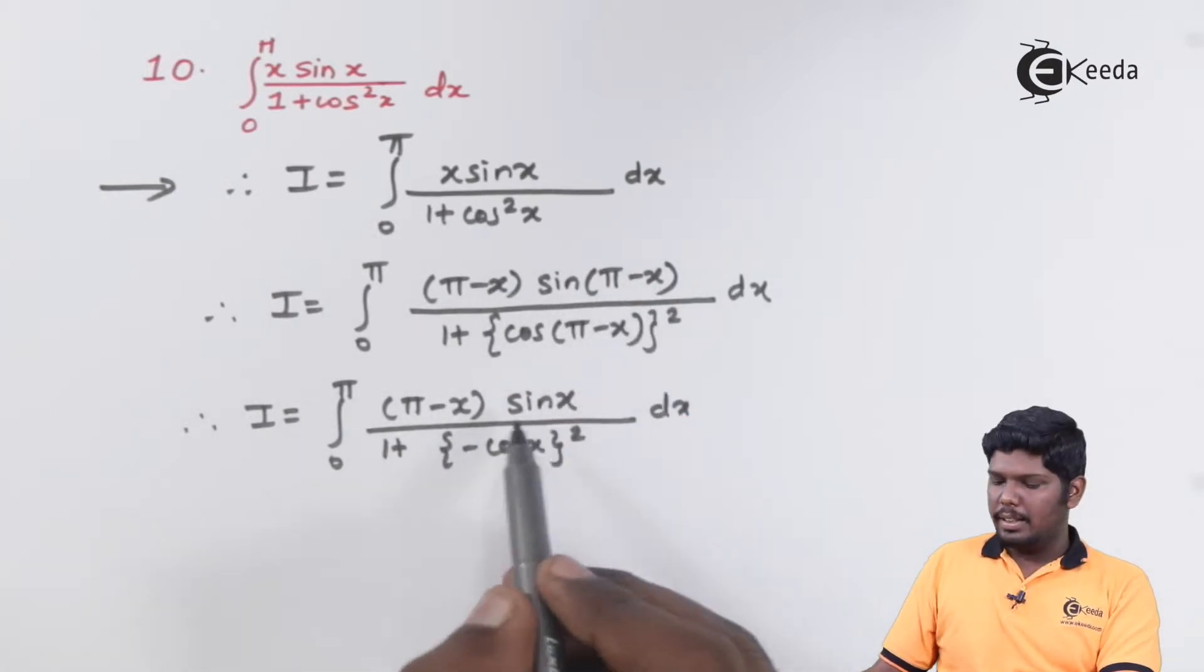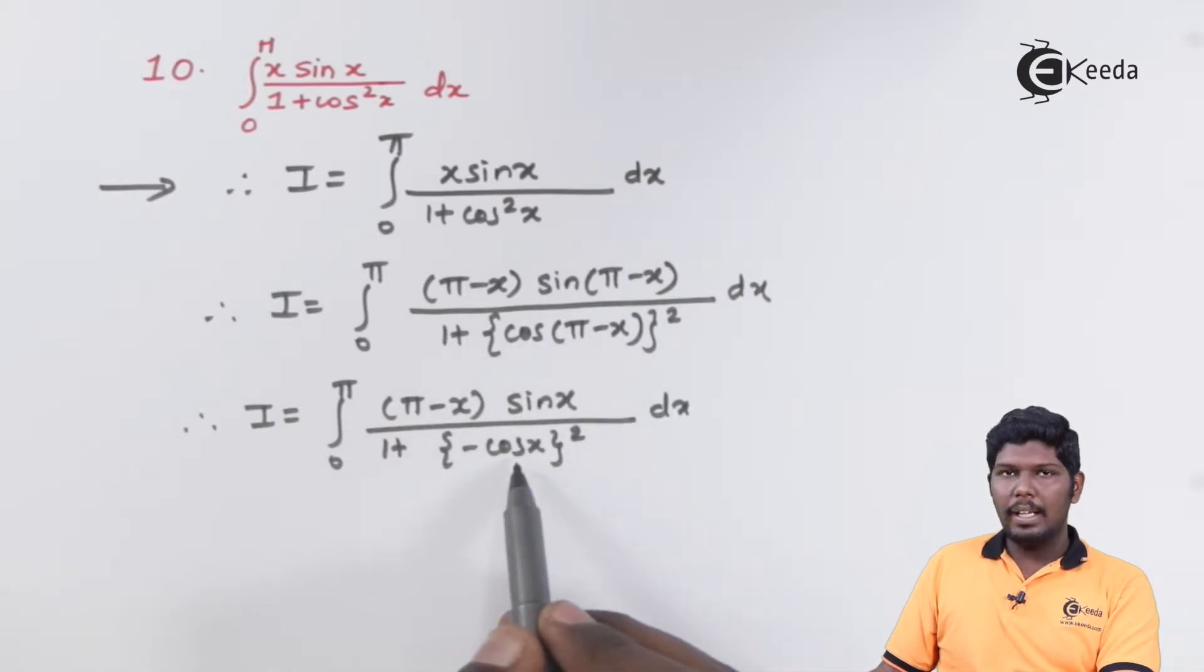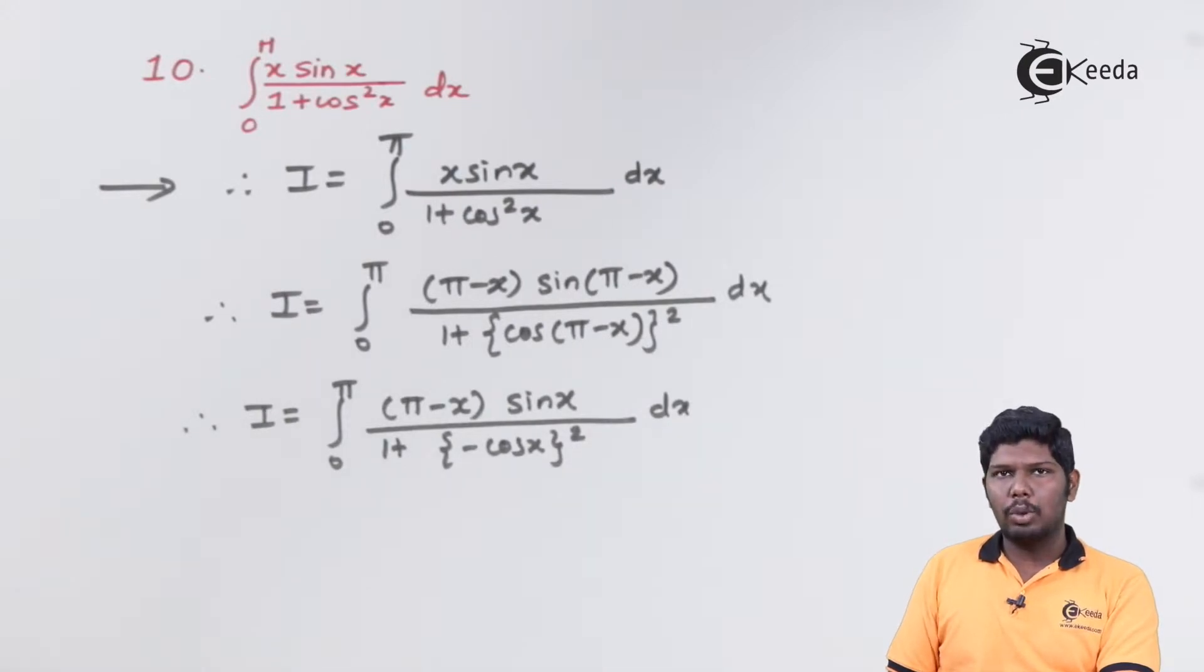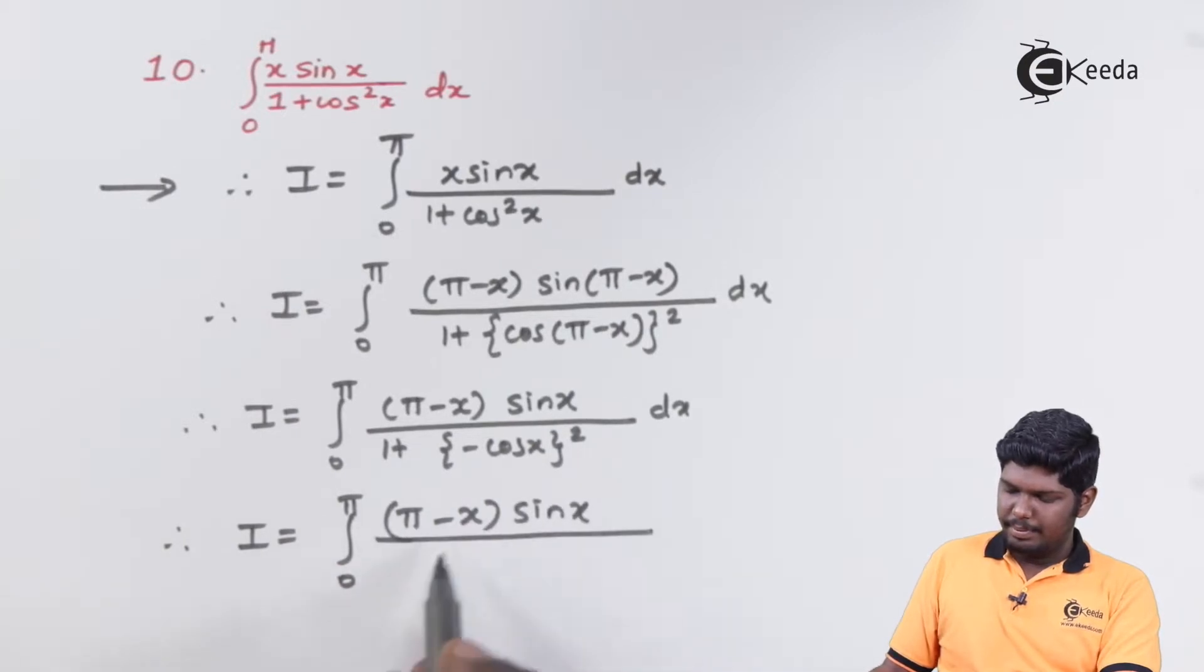Sin of pi minus x will give you sin x and cos of pi minus x will give you minus cos x the whole square. And further minus cos x the whole square will give you plus cos square x.